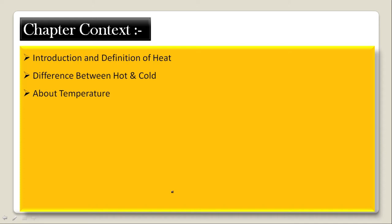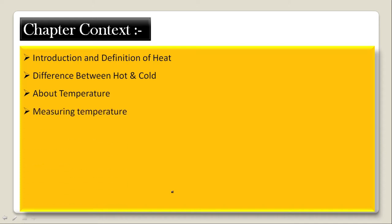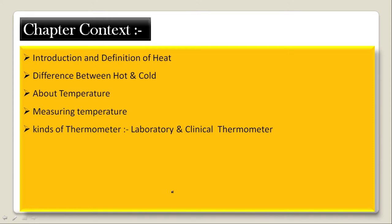The third was about temperature — what temperature is. The fourth was measuring temperature — how we can measure temperature, in which we had seen that a device used to measure temperature is known as a thermometer. There were two kinds: laboratory thermometers and clinical thermometers, and another type is the digital thermometer. The fifth was reading a thermometer — how we can read the thermometer readings.